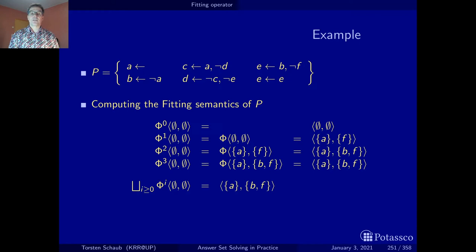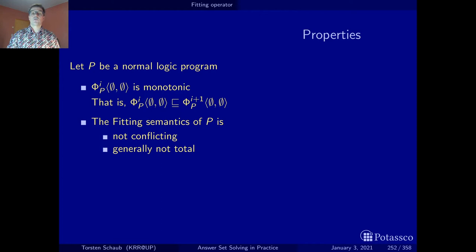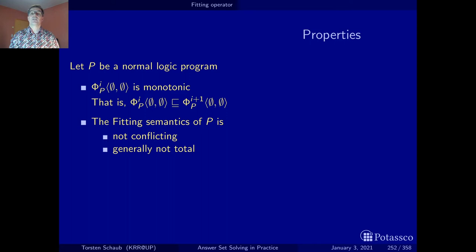Let's summarize a few properties of the fitting semantics. First, the iterative variants are monotonic — at each stage you get more true and false atoms. The semantics can never produce a conflict and in general does not yield a total interpretation. Normally you end up with a partial interpretation where you can't decide certain atoms — in our case, C, D, and E.